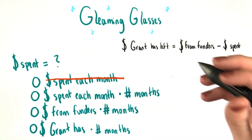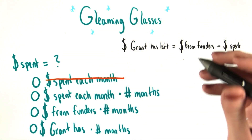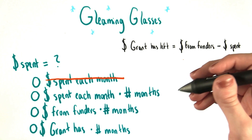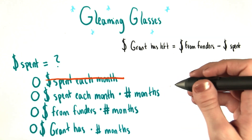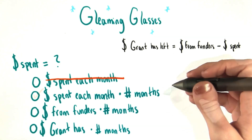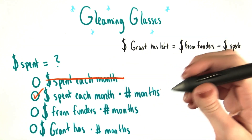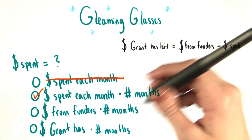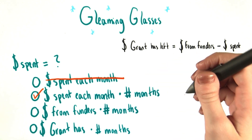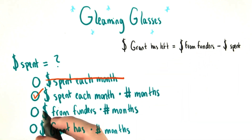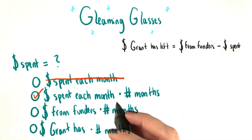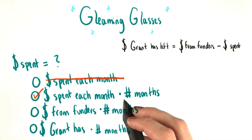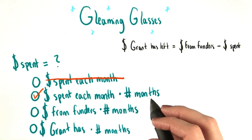However, since we know that the same amount of money is spent each month, the second choice right here is the correct one. It says that the total amount of money spent after a certain amount of time is equal to the money spent each month times the number of months that have gone by.